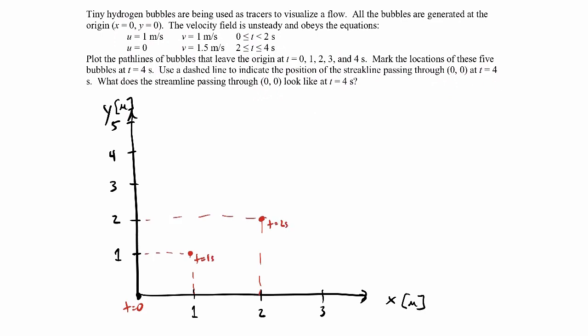Now from two to three seconds, I'm going to move only vertically — x velocity is zero and y velocity is 1.5. So I go from y=2 up to y=3.5 at t equals three seconds. Then from three to four seconds, I'm still moving vertically, going up another 1.5, which puts me at y=5. So there I am at four seconds for that first bubble, released at t equals zero. Let me draw that in as a path line — it should be a straight diagonal line from the origin to (2,2), then vertical up to (2,5).